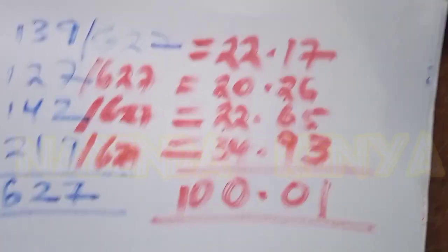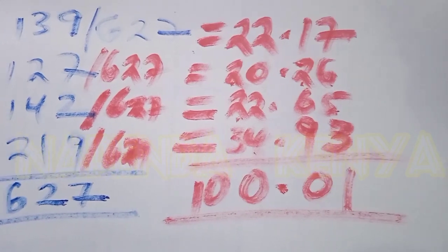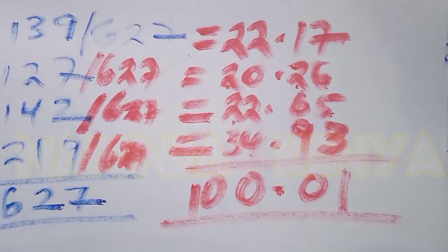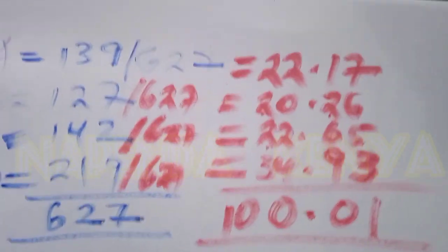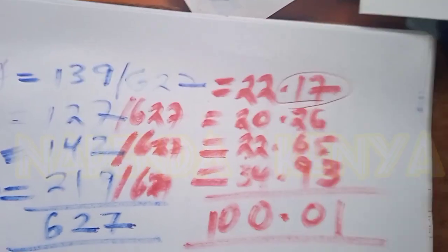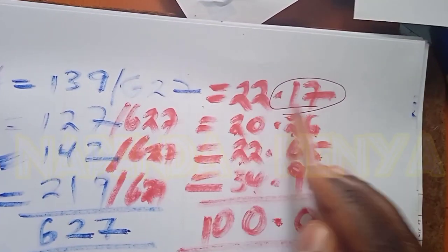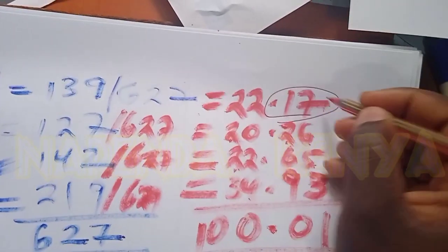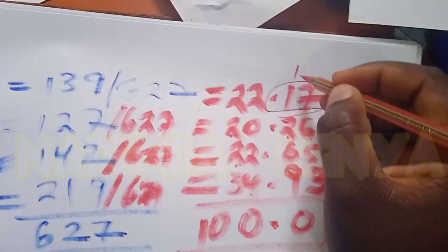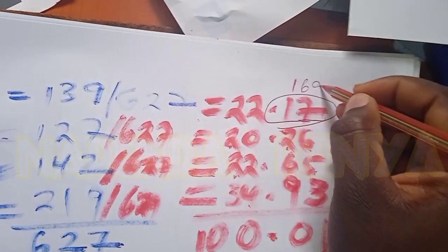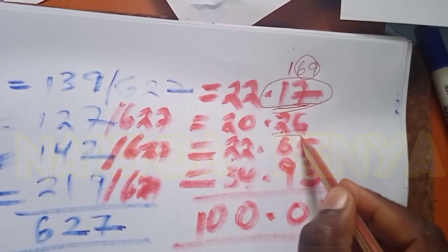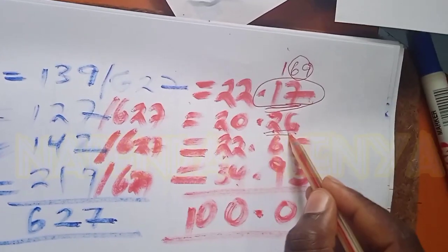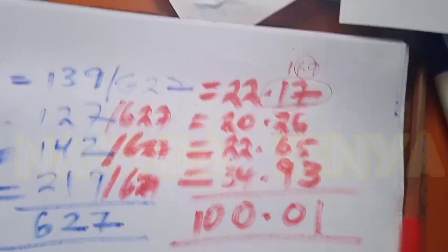So the question is how did we arrive at 100.01%, not 100.00%? This is what is disturbing Kenya. Where is the trick? The trick is here, rounding off. This is supposed to be 22.169, but you round off to make it 22.17. You round this off it becomes 0.7, you round this off it becomes 2.6 instead of 2.57.